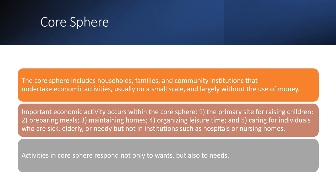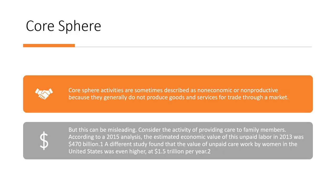Important economic activity occurs within the core sphere, including the primary site for raising children, preparing meals, maintaining homes, organizing leisure time, and caring for individuals who are sick, elderly, or needy but not in institutions such as hospitals or nursing homes. Core sphere activities respond not only to wants but also to needs. These activities are sometimes described as non-economic or non-productive because they generally do not produce goods and services for trade through a market, but this can be misleading. For example, a 2015 analysis estimated the economic value of unpaid family care labor in 2013 at $470 billion.